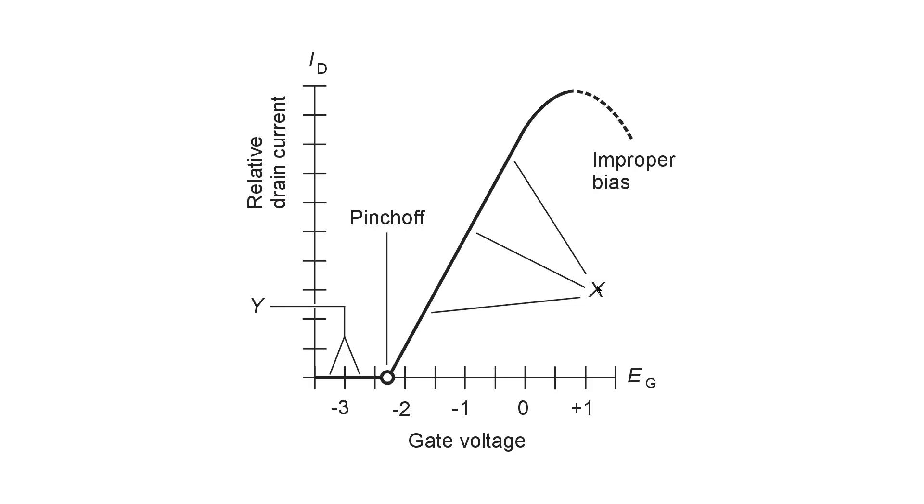Right about here. This range shown as X, actually it's pretty much this entire straight line region, is considered the linear operation bias zone or something to that effect in the N-channel JFET. Similar characteristics apply to P-channel junction field effect transistors and other types of field effect transistors such as metal oxide semiconductor types.